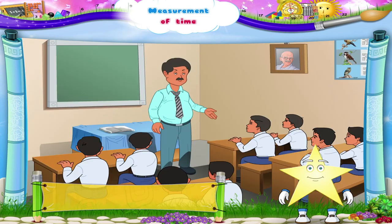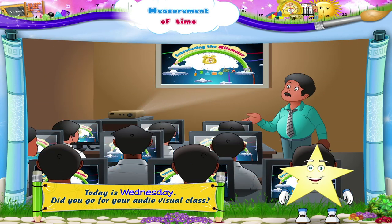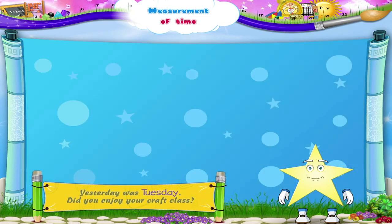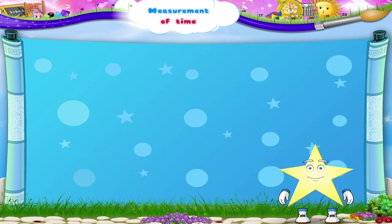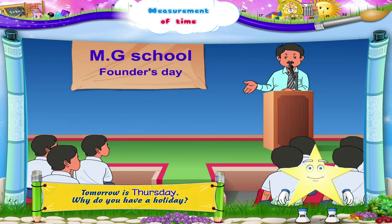Starry, today is Wednesday. Did you go for your audio-visual class? That's good! Yesterday was Tuesday. Did you enjoy your craft class? Oh, you learnt how to make a paper boat. But tomorrow is Thursday. Why do you have a holiday? It's the Founder's Day at your school.